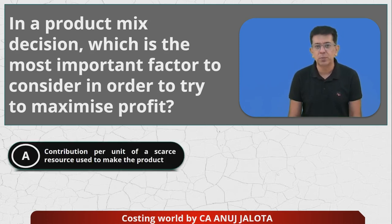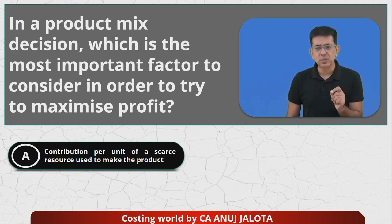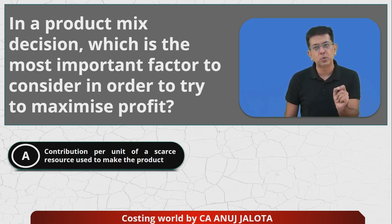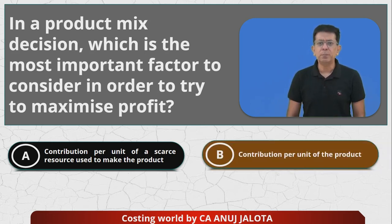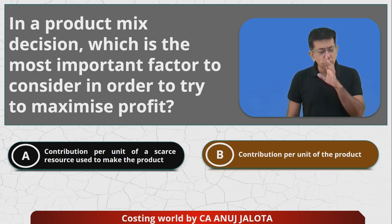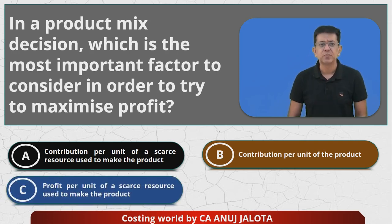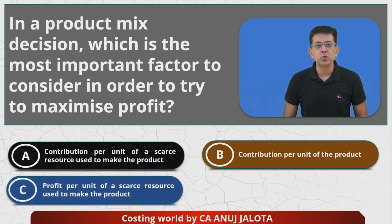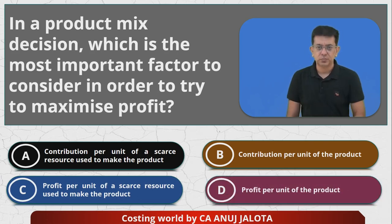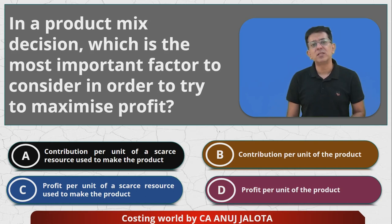Option A: contribution per unit of the scarce resource used to make the product — for example, contribution per machine hour or contribution per labor hour. Option B: contribution per unit of the product. Option C: profit per unit of the scarce resource used to make the product. And Option D: profit per unit of the product.